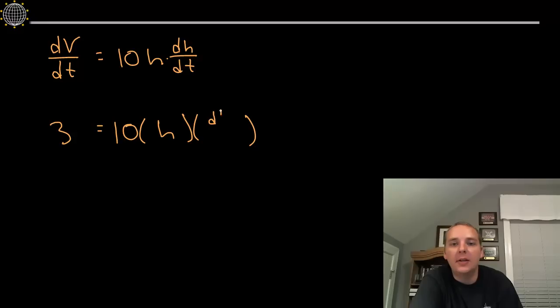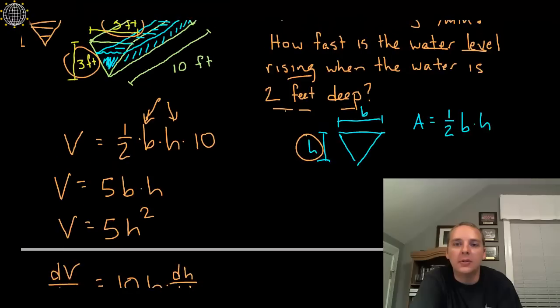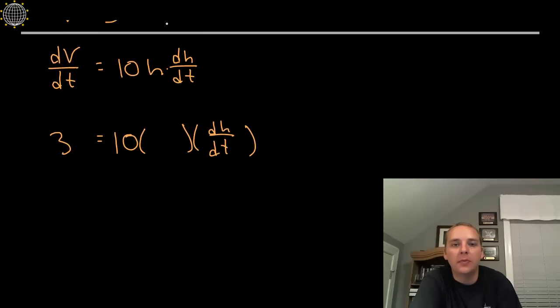And I'm sorry, I should have filled in actually what that H was, they told us, sorry, it should have been 2. Okay, there you go. This is the guy we're looking for, dH/dT. So, quick little algebra, dH/dT, change in height over change in time, would be 3 divided by 20, 2 times 10 is 20, 3 over 20, 3 over 20 what?